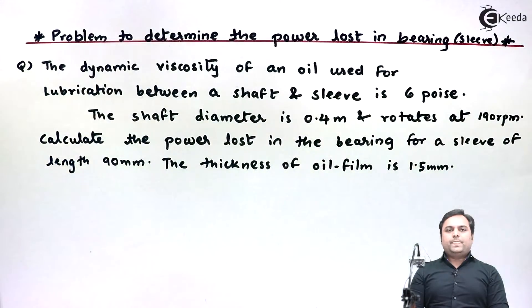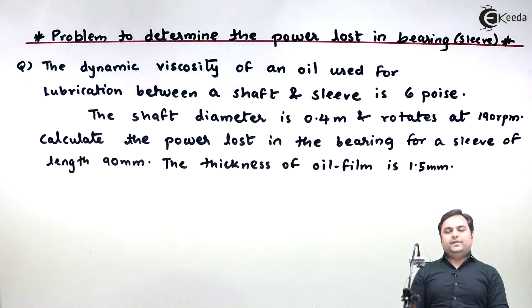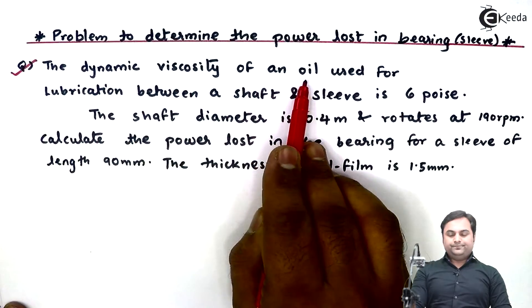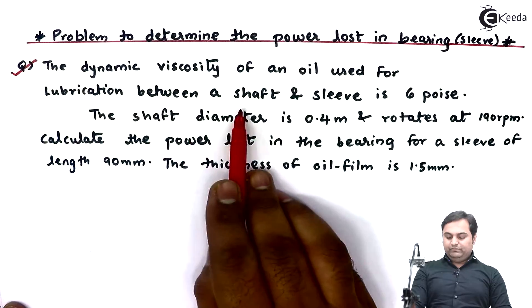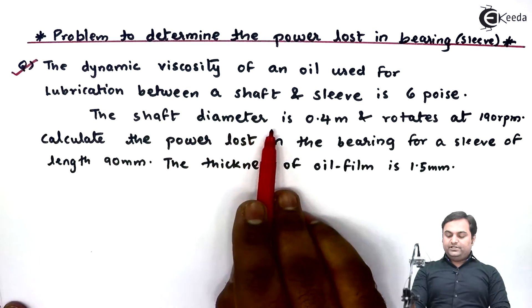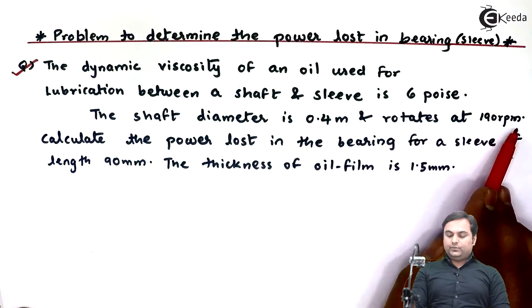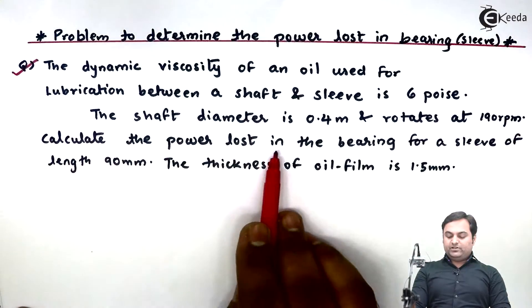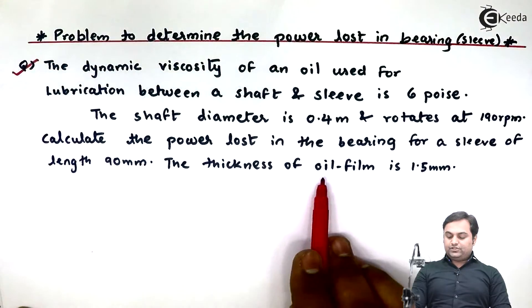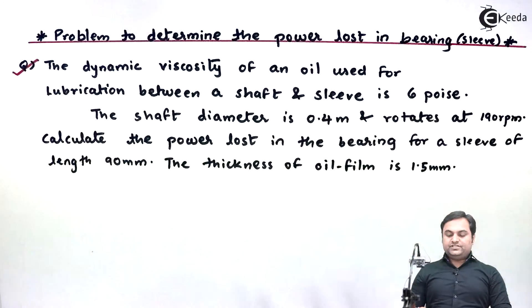In this video we will see a problem in which we have to calculate power lost in the bearing, which is also called a sleeve. The dynamic viscosity of an oil used for lubrication between a shaft and sleeve is 6 poise. The shaft diameter is 0.4 meter and rotates at 190 rpm. Calculate the power lost in the bearing for a sleeve of length 90 mm. The thickness of oil film is 1.5 mm.